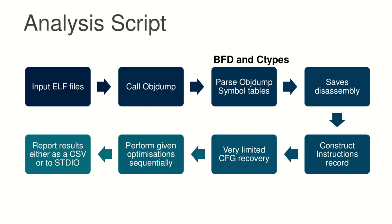If the action requires constructing an instruction record, we construct one and perform very limited control flow graph recovery. Sometimes we want to check how different things affect code size — we might propose optimizations that overlap, where one instruction makes others less effective — so we need to be able to execute these actions sequentially. There is a loop that checks all the command-line actions and executes them sequentially, then we report the savings.